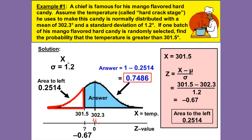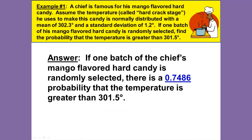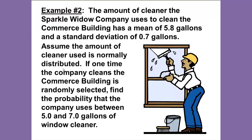Since we are not looking for the area to the left and we are looking for the area to the right, we will need to subtract 1 minus 0.2514 to get 0.7486 as our answer. Be sure as you're doing these problems that you block in, circle, or somehow indicate what your final answer is. If one batch of the chef's mango flavored hard candy is randomly selected, there is a 0.7486 probability that the temperature is greater than 301.5.